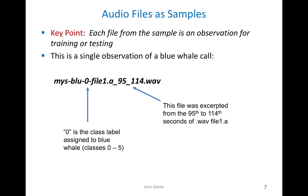One key point is that the files themselves are the observations for training and testing, so how you name the files is very important. splitwave.py names them using the following convention: the center part is the original WAV file name, for example file1.a. To the right, I've added the time interval from the 95th to the 114th second as an identifier. To the left, I've added the species — mysticine blue for blue whale — and very importantly, the zero in the middle, which is the class label assigned to blue whales. The six species have been assigned class labels zero through five, which are later used in the neural network model in the one-hot encoding procedure and turned into label tensors.